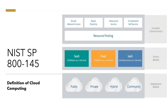In SaaS, the CSP (cloud service provider) is responsible for all the infrastructure, compute, operating system, storage, and the application itself. The user only sees the application. A good example of this is email used on a day-to-day basis, like Gmail.